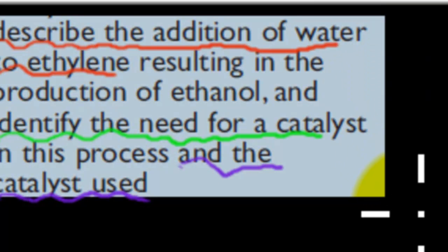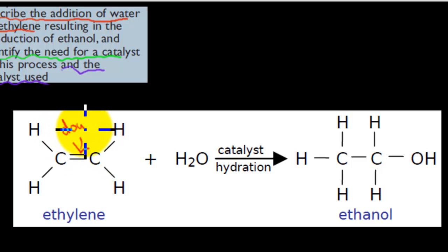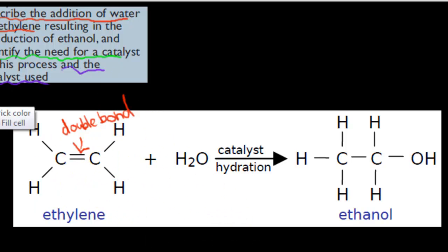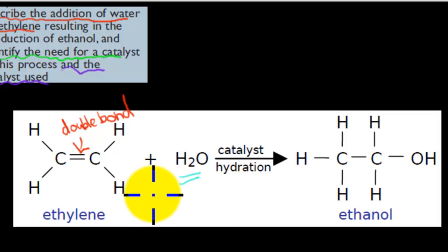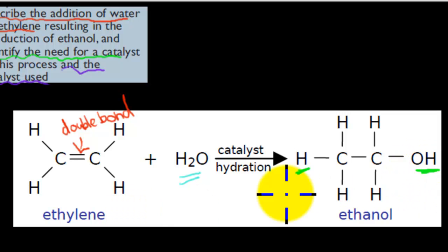The first part is to describe the addition of water to ethylene. Here we have an ethylene molecule, and remember ethylene was unique because it had that double bond. We have to describe the reaction. The very important part is that we have H₂O — water — and ethylene plus water react to make ethanol. The difference between ethylene and ethanol is that ethanol has H₂O added to it.